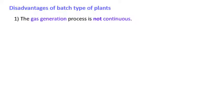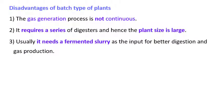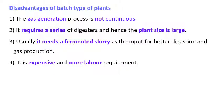The disadvantages of the batch type are: gas generation is not continuous; it requires a series of digesters so the plant size is large; it usually needs fermented slurry as input for better digestion and gas production; and it is expensive and more labor-intensive.